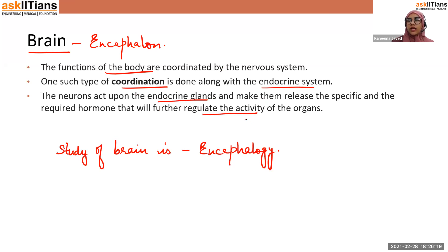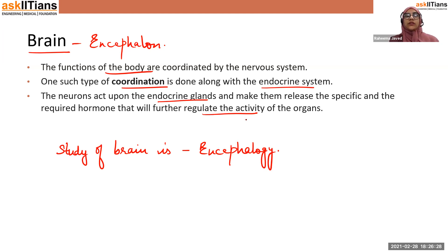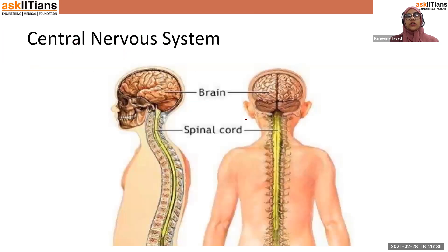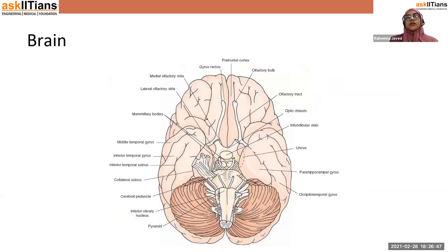A little bit of endocrine system is explained here, which is related to the nervous system — we'll discuss that in further videos. The central nervous system consists of brain and spinal cord. Looking at the structure of the brain, I want to show you the olfactory bulb and the olfactory tract, which are part of the forebrain. Basically, the brain consists of forebrain, which is prosencephalon; midbrain; and hindbrain, which is rhombencephalon.